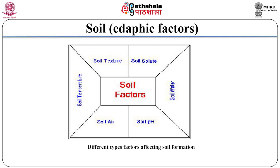Soil texture: the size of soil particles varies from microscopic particles called clay to larger particles called sand. Loam soil is a mixture of sand and clay particles. Sandy soils are suitable for growing plants because they are well aerated, excess water drains away quickly, they warm up quickly during the day, and are easy to cultivate. However, sandy soils are unsuitable because they do not retain much water and soon dry out, and contain few soil nutrients required for plant growth. Clay soils are suitable because they hold large quantities of water and are rich in mineral nutrients, but are unsuitable in that they are badly aerated, soon become waterlogged, and are difficult to cultivate.